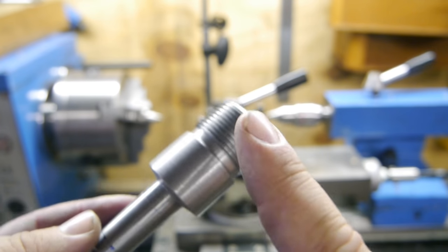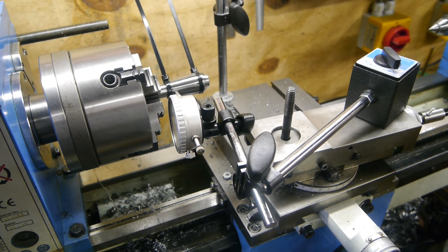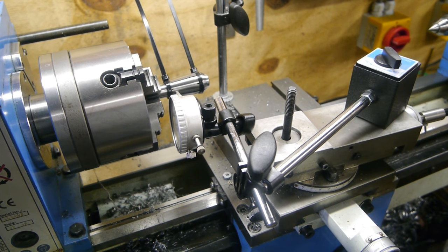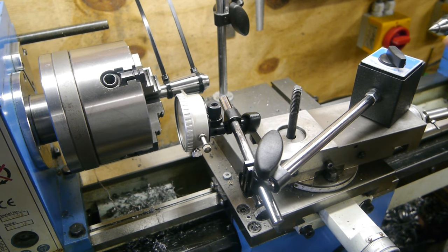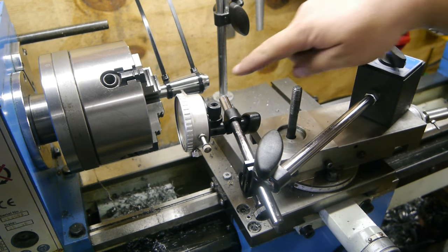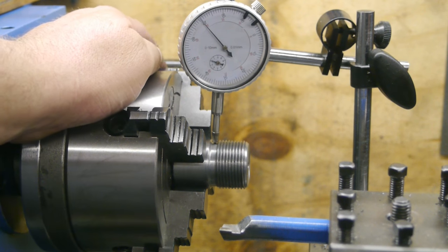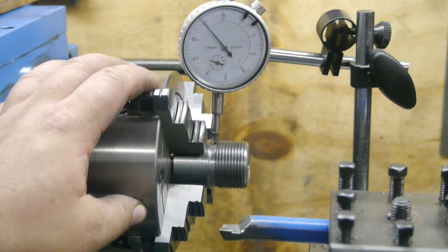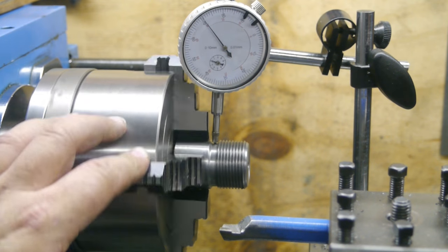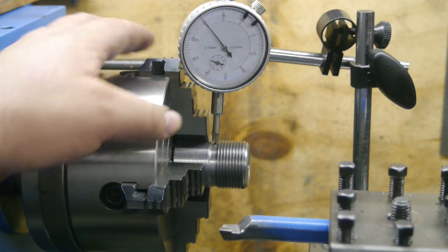Next I'm gonna chuck it up in the four jaw and start working on the internal taper. This is how I set up the compound for cutting the taper. I wish I had a better stand because this one is pretty hard to set up on the center line, but that's what I have. I got it indicated to within a hundredth of a millimeter. The needle is jumping a bit because the surface finish isn't perfect. So next is boring this thing out. Well, drilling first and then boring.